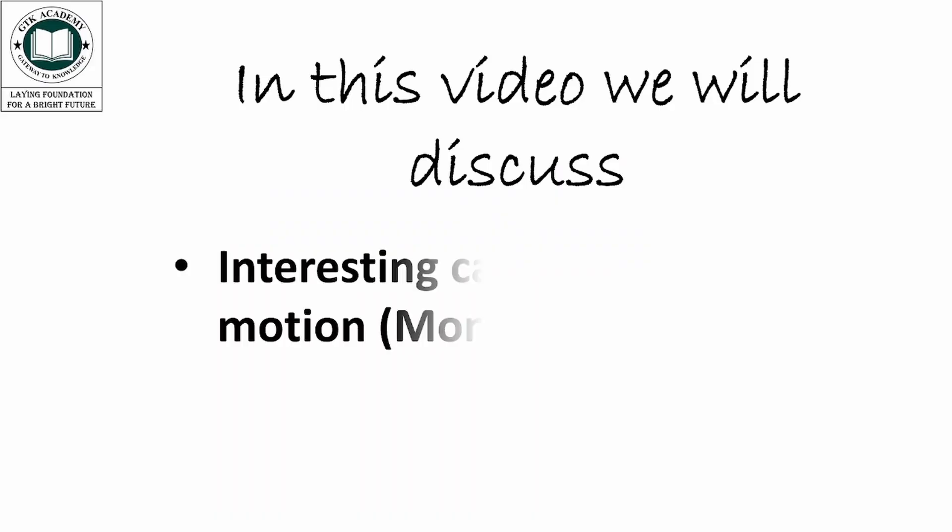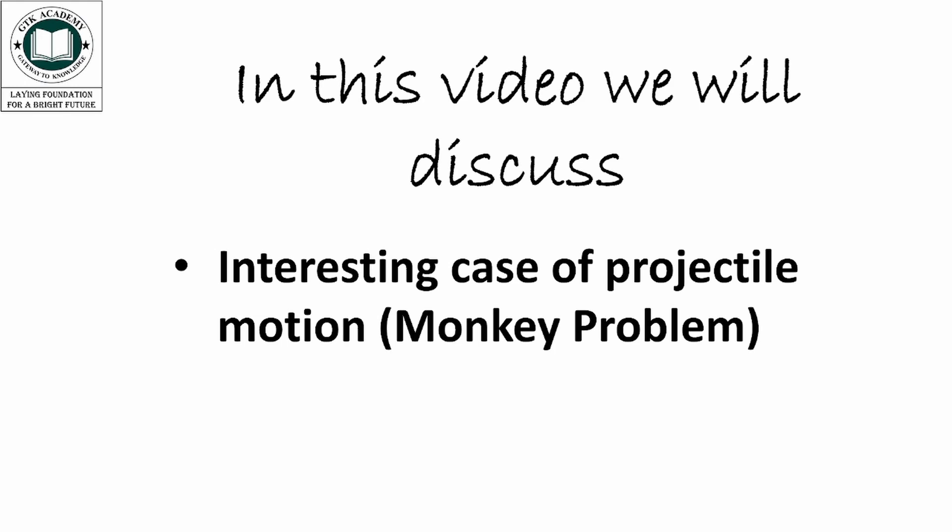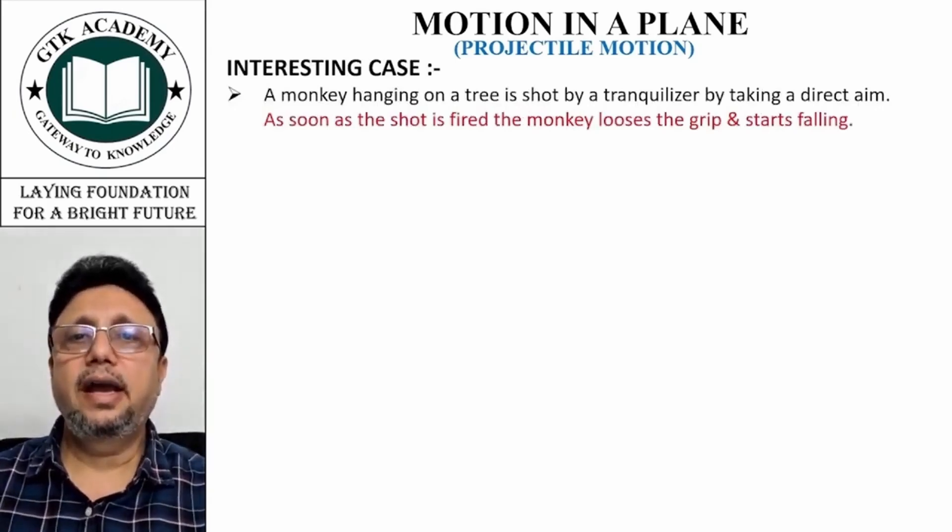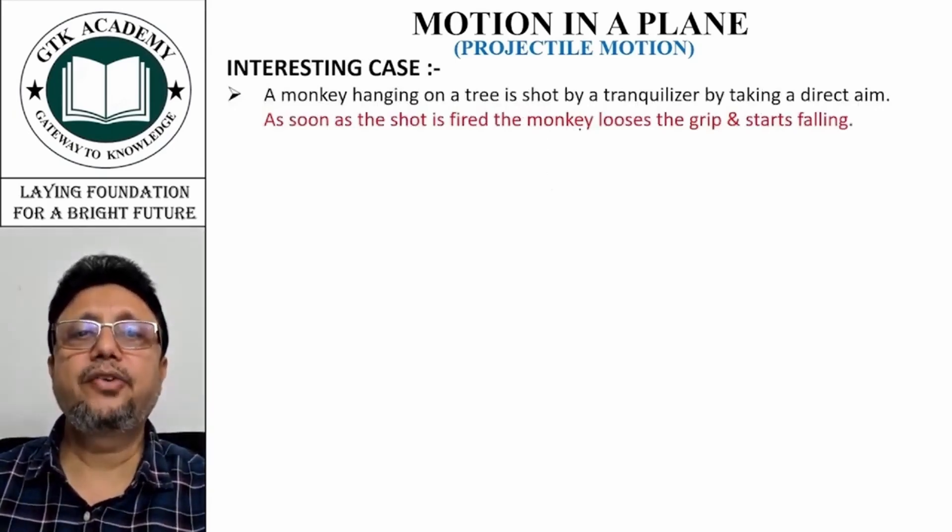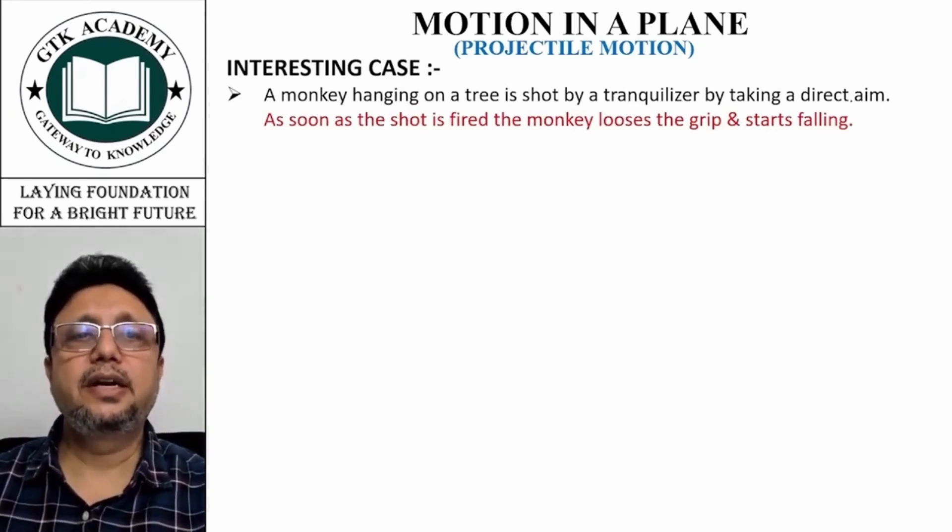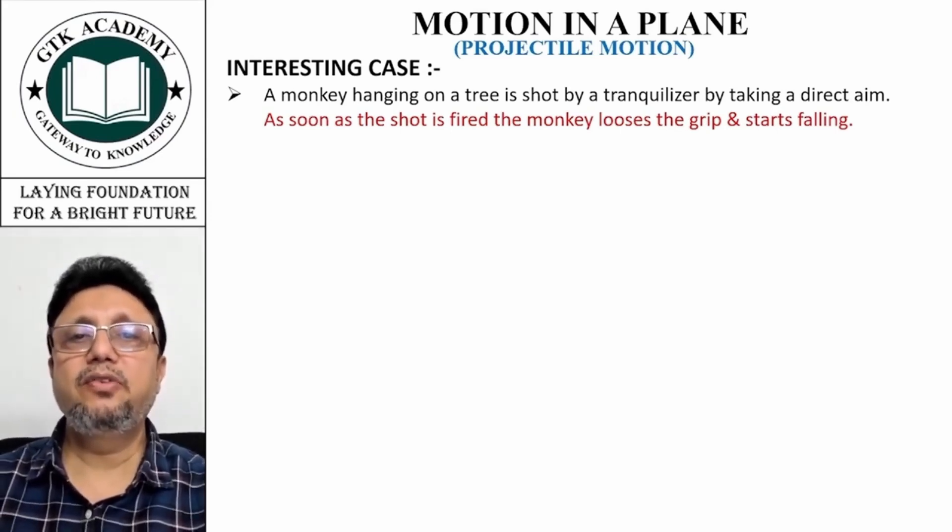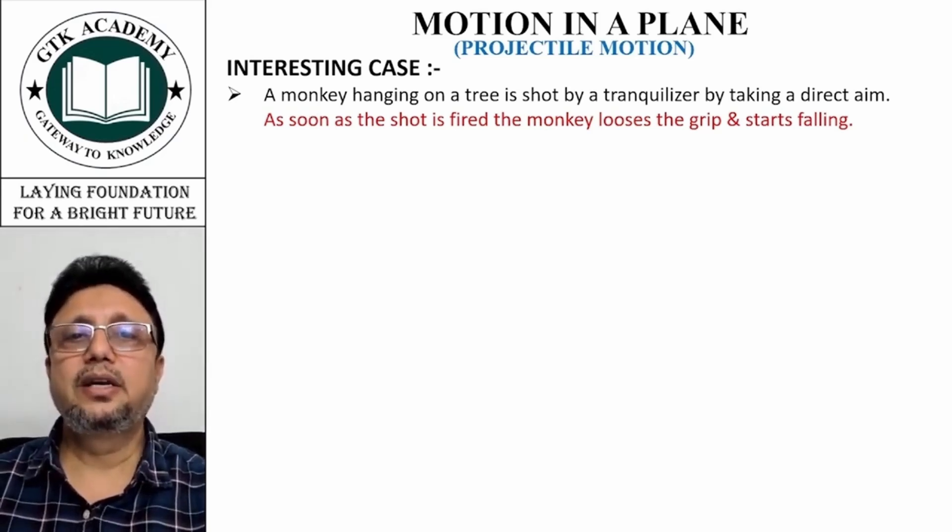In this video we will discuss an interesting case of projectile motion called the monkey problem. A monkey hanging on a tree is shot by a tranquilizer by taking a direct aim.